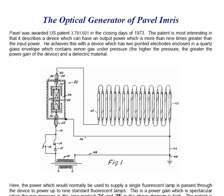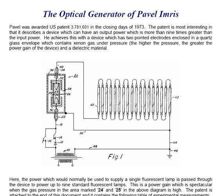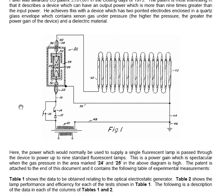The device is very simple and as shown in this diagram here, the area of most interest is the area marked 24 and 25. The power which would normally be used to supply a single fluorescent lamp is passed through the device to power up to nine standard 40 watt fluorescent lamps.